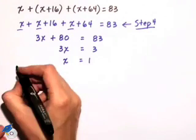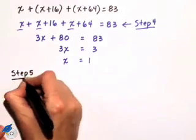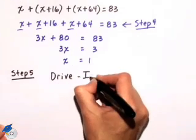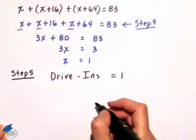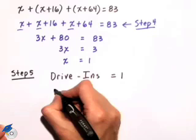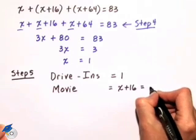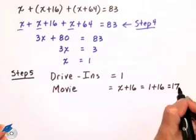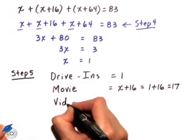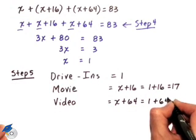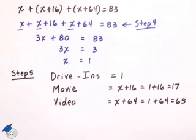Remember, X was the number of drive-in theaters. So I can say the number of drive-in theaters is equal to 1. X plus 16 is the number of movie theaters. So the movie theaters is equal to X plus 16, which in our case is 1 plus 16, or 17. And finally, the number of video rentals we decided was X plus 64, or in our case 1 plus 64, which is equal to 65. So we can see that there was one drive-in theater, 17 movie theaters, and 65 video rental stores per 1 million U.S. residents.